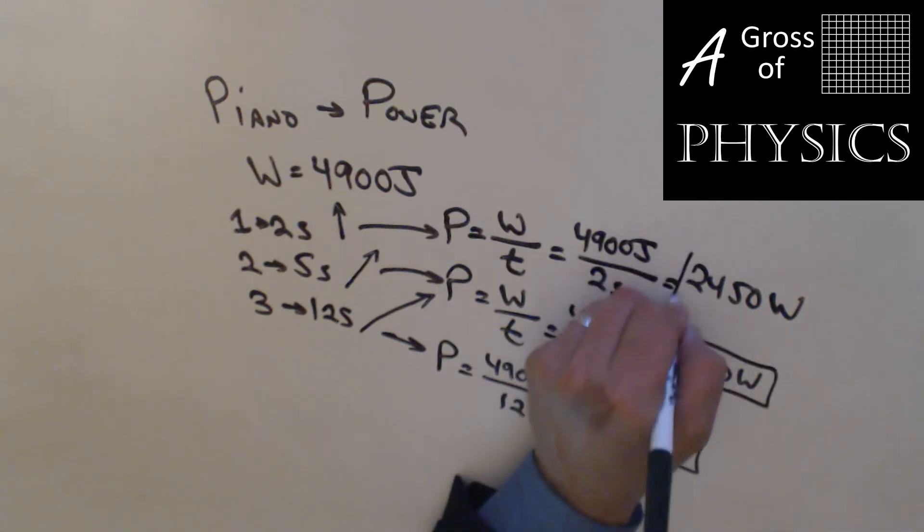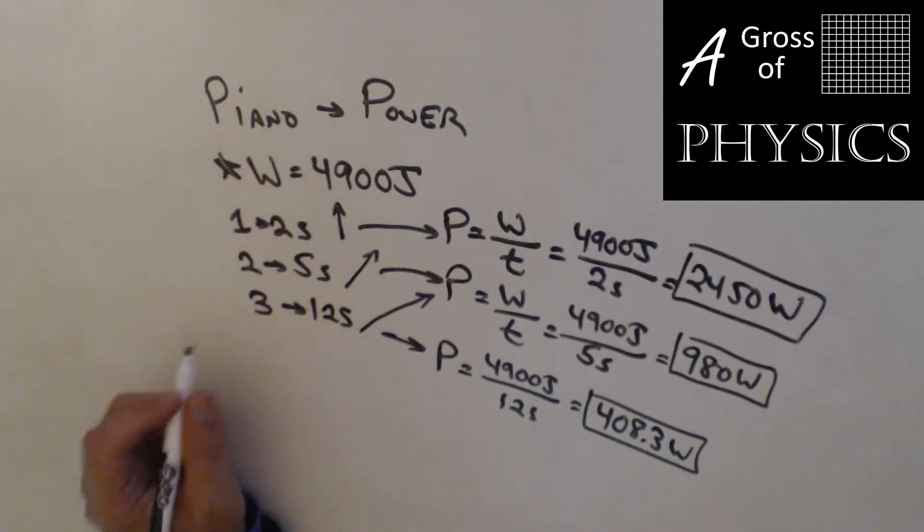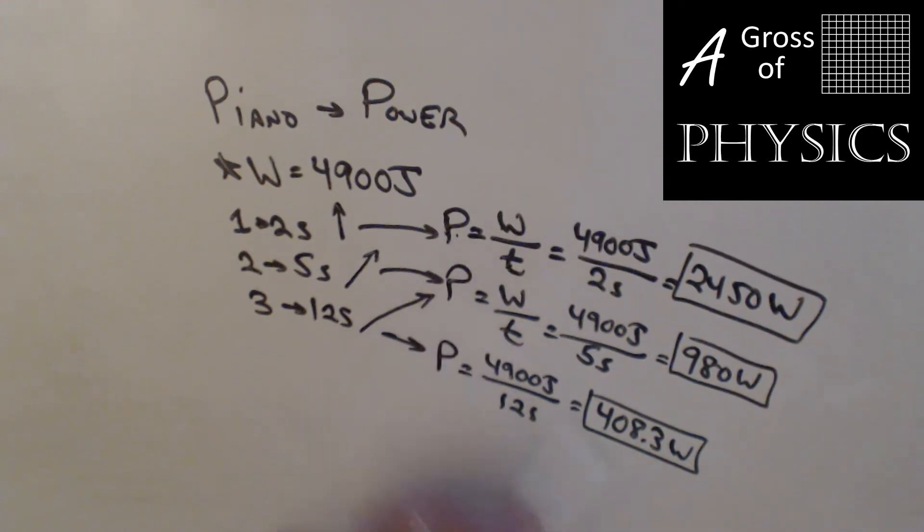You'll see that although the work is the same for all three, the power is significantly different. If work is constant, power and time are indirectly related. The shorter the time, the bigger the power. There's an indirect relationship between the power and the time. So the quicker you do a task, the more power output you have.